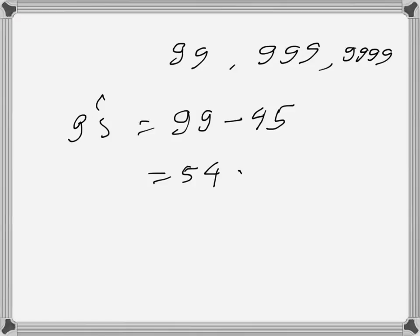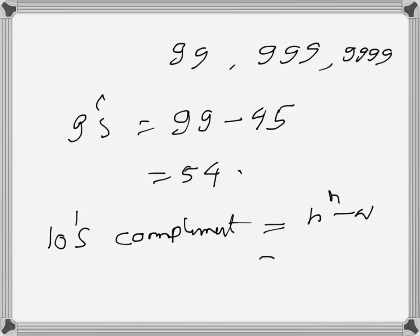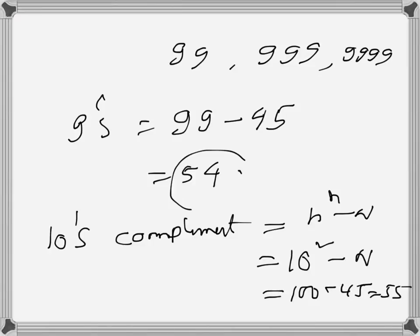The 10's complement is simply 9's complement plus one. According to the formula, 10's complement is r to the power n minus N, which is 10 squared minus 45, giving us 100 minus 45 equals 55. But instead of using the formula, we can always just take the 9's complement and add one to get the 10's complement.